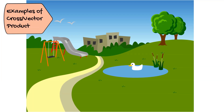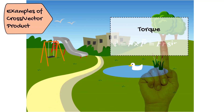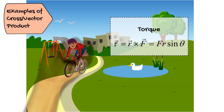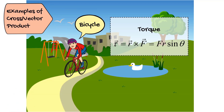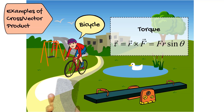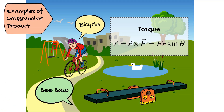Now the examples of cross product. For cross product we have torque: torque equals r cross f equals rf sin theta. In the playground, a boy applies torque onto a bicycle wheel. We also have the seesaw, which also applies the concept of torque. Torque is a vector quantity, that's why cross product is also called the vector product.